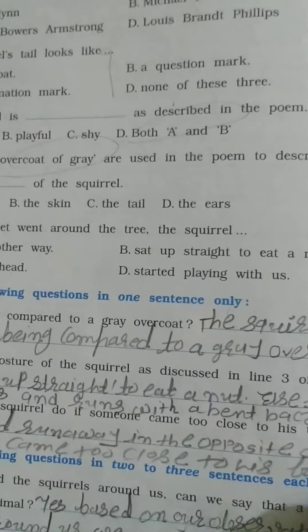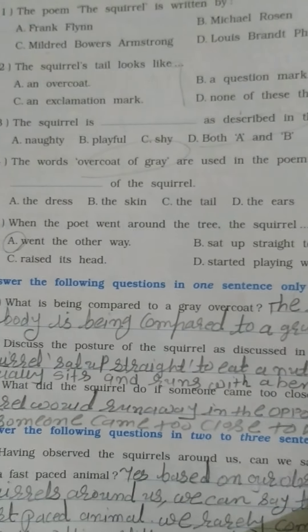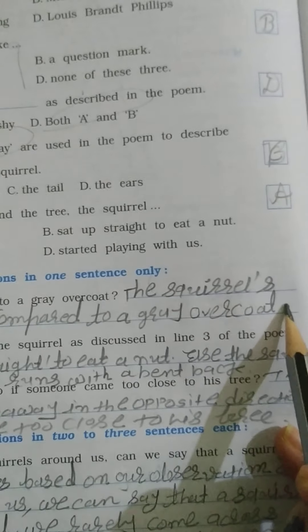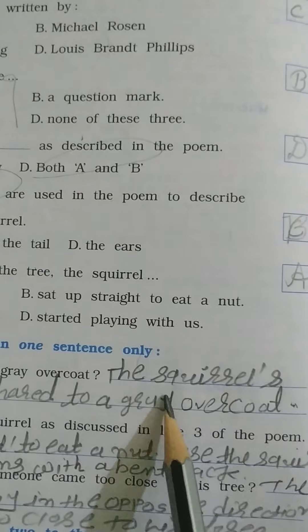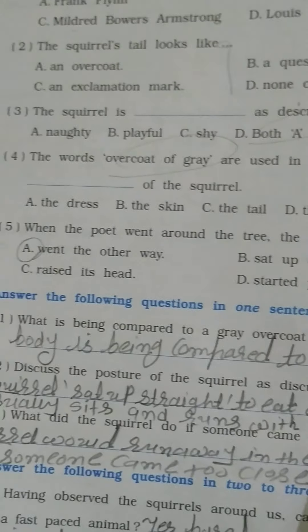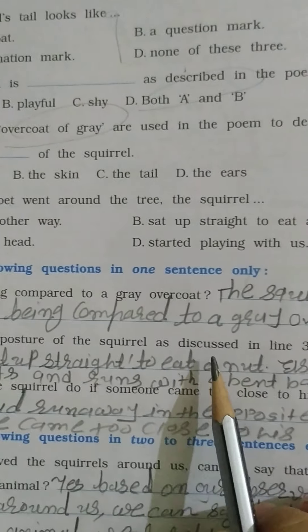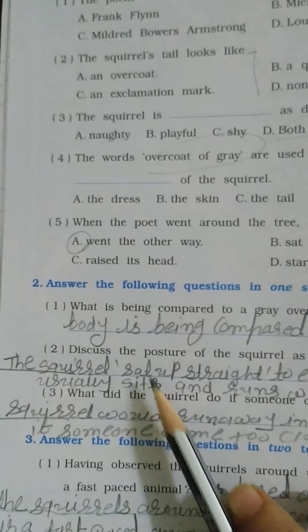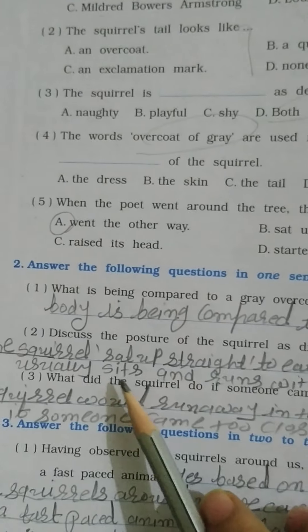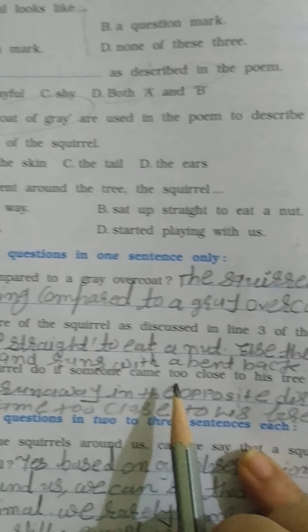Answer the following questions in one sentence only. What is being compared to a grey overcoat? The squirrel's body is being compared to a grey overcoat. Discuss the posture of the squirrel as described in line 3 of the poem. The squirrel sat up straight to eat a nut.